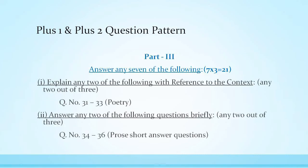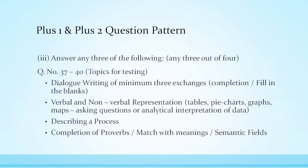Part three, answer any seven of the following, seven into three equals 21 marks. Explain any two of the following with reference to the context, any two out of three, from poetry lines 31 to 33. Answer any two of the following questions briefly from prose, short answer, questions 34 to 36. Answer any three of the following, any three out of four, question number 37 to 40, topics for testing.